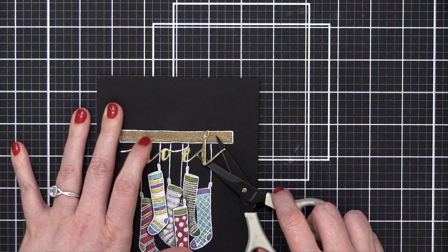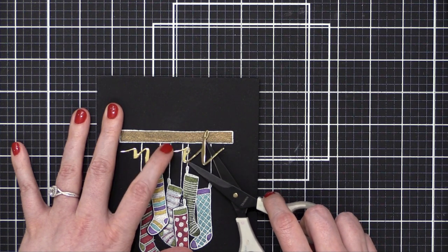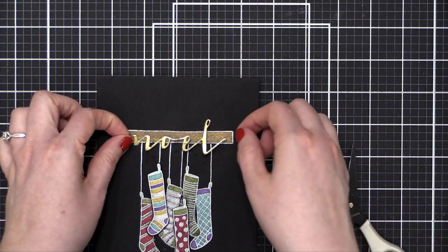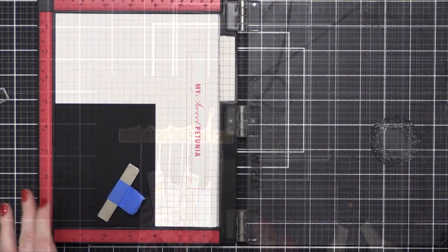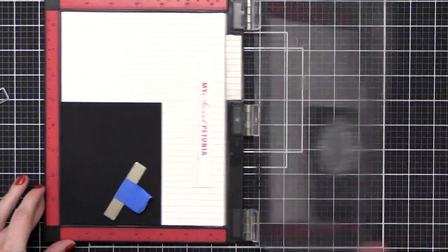Originally I glued the noel right there beneath the mantle and it looks okay, but I thought you know what, there's got to be a better way to do this. When I peeled it up from the paper, it tore a little bit of the black watercolor paper. It's not going to be very noticeable on the final card, so I decided to proceed and keep going with a different idea.